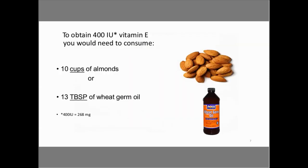Here's an interesting point: to obtain 400 international units of vitamin E, you would need to consume 10 cups of almonds or 13 tablespoons of wheat germ oil. Obviously, no one would be eating 10 cups of almonds a day — we couldn't handle that digestively or calorically — and the same goes for wheat germ oil.